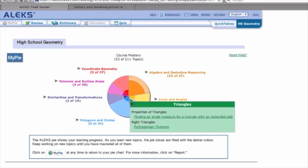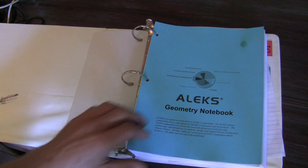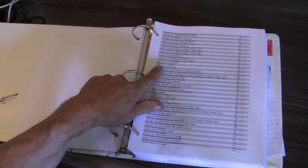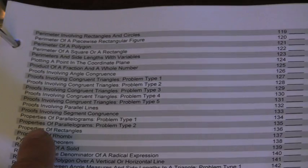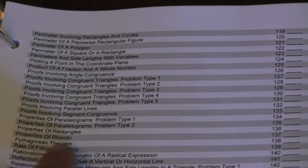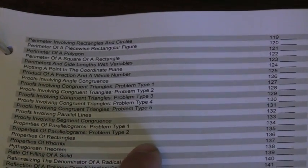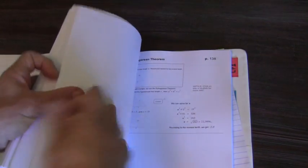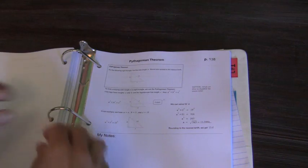Let's try the Pythagorean Theorem. So when we click on that topic, we immediately want to go to our ALEKS Notebook, turn to the table of contents, and find that topic. Here we see that Pythagorean Theorem is on page 138. So we'll want to turn to page 138 and remove that page.